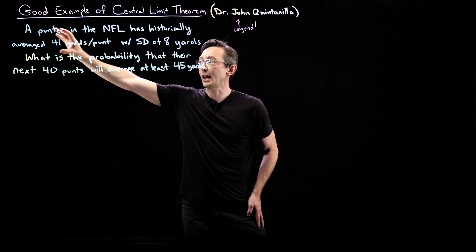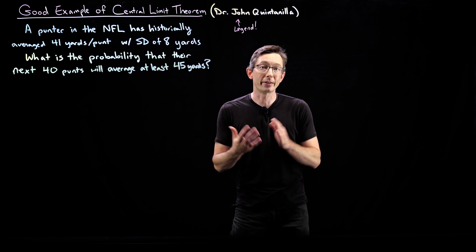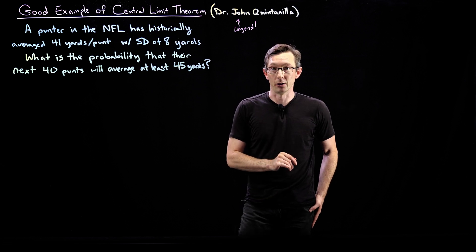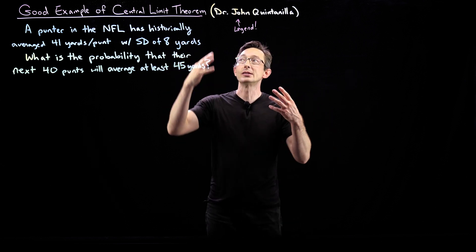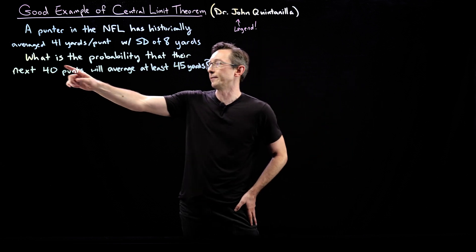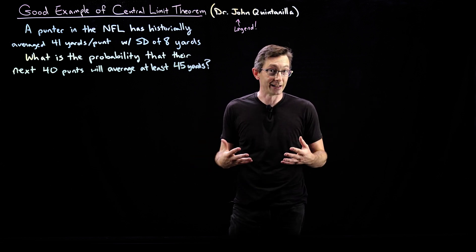What is the probability that this lonesome kicker in their next 40 punts will average at least 45 yards? So their historical average is 41 yards, with a certain standard deviation, what's the probability that their next 40 kicks are going to average at least 45 yards? This is a really interesting probability problem. And we're going to use the central limit theorem to solve this because essentially 40 is a large enough number of kicks that the central limit theorem is going to kick in.